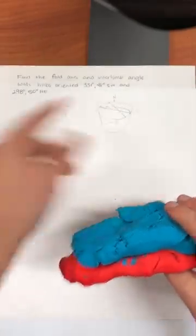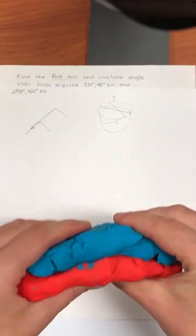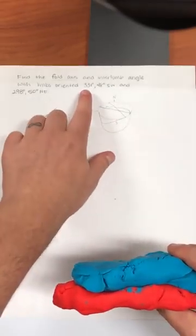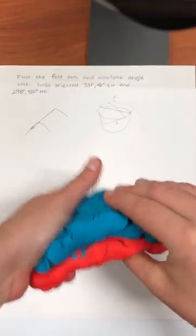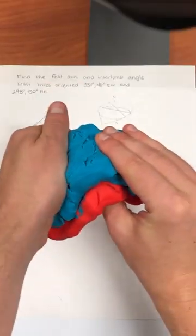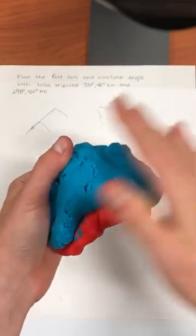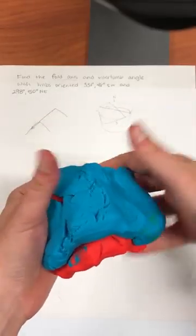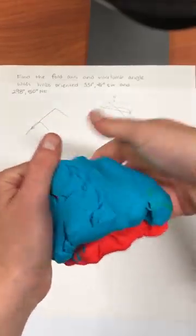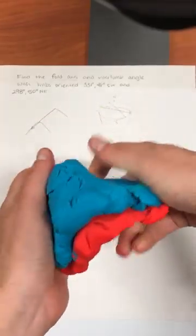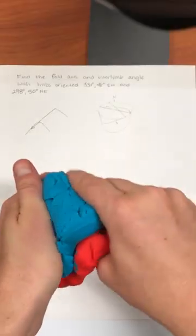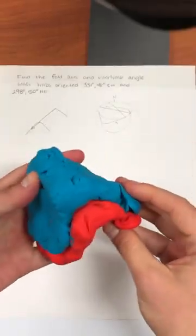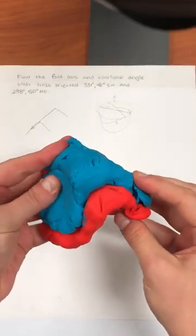I'm gonna fold one limb so that it's similar to the limb oriented 331 dipping to the southwest. So that's gonna dip down to the southwest. And I'm gonna orient this limb so that it's striking more west than the other limb, dipping down.